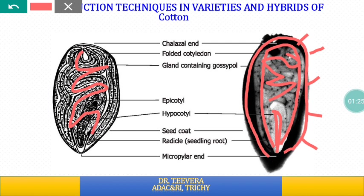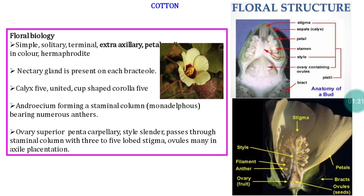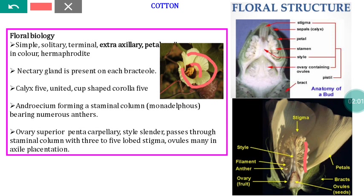Regarding floral biology, cotton has bigger-sized flowers on the axillary positions. The petals are initially yellow in color, and nectary glands are available on the inner side of the flowers — some brown or red-colored glands. The calyx are five in number, united and cup-shaped. There is a staminal column — a terminal column — that surrounds the style and stigma. The stigma is completely surrounded by the staminal column, and in the base the ovary is available.